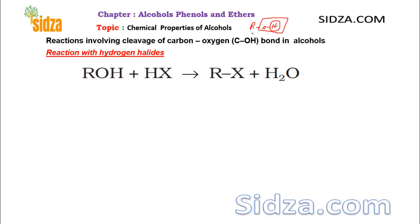That means the bond breaking will now take place between the carbon and oxygen. This carbon-oxygen bond breaking takes place when you react the alcohols with halogen acids — the halogen will replace the OH and you get the alkyl halide plus water.